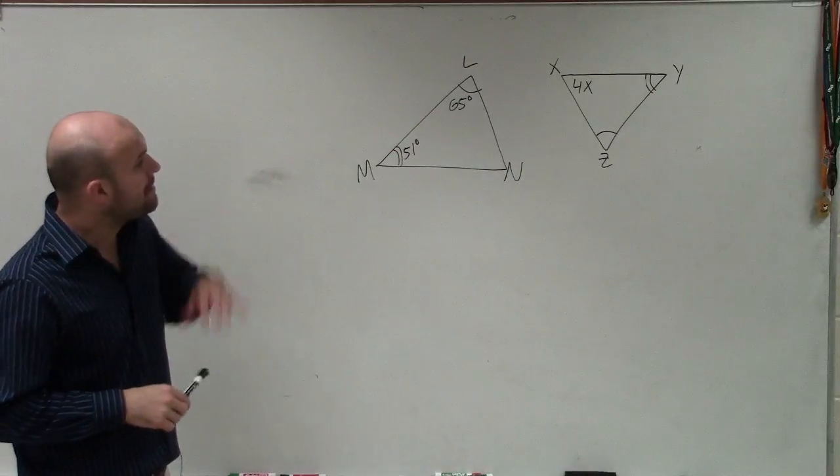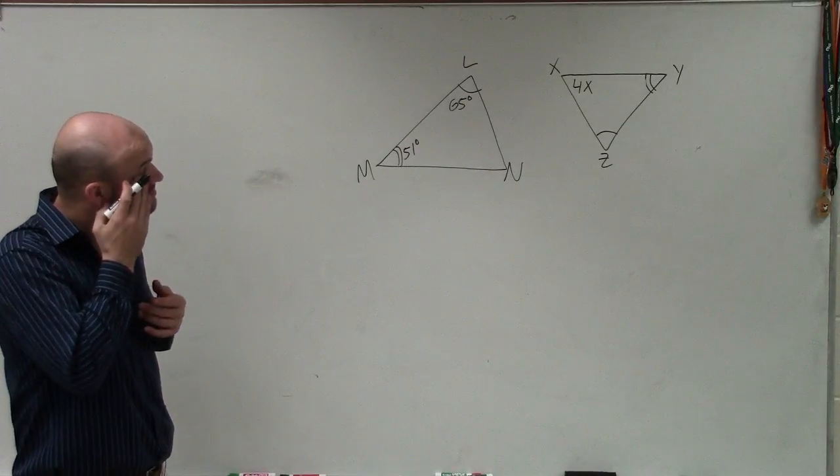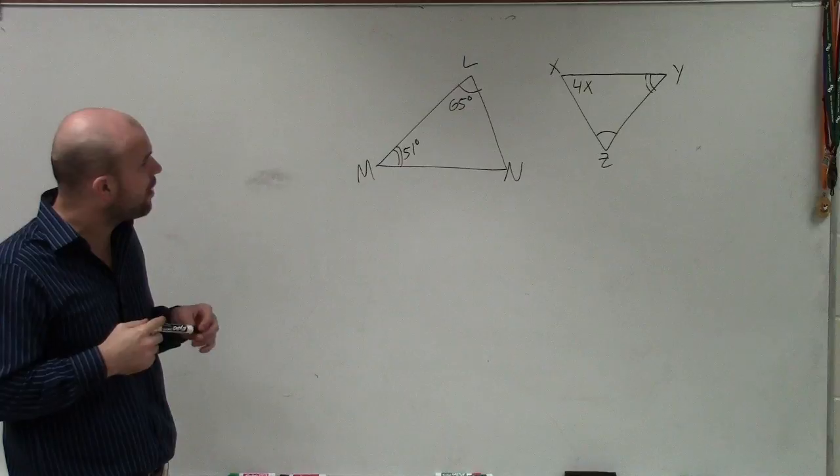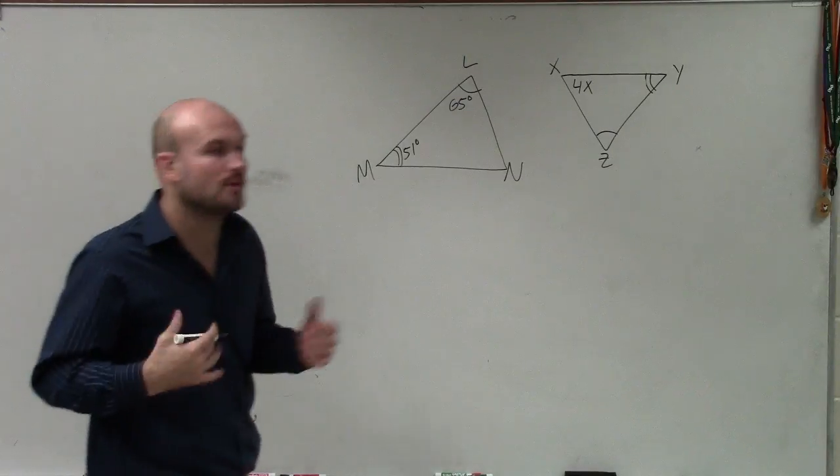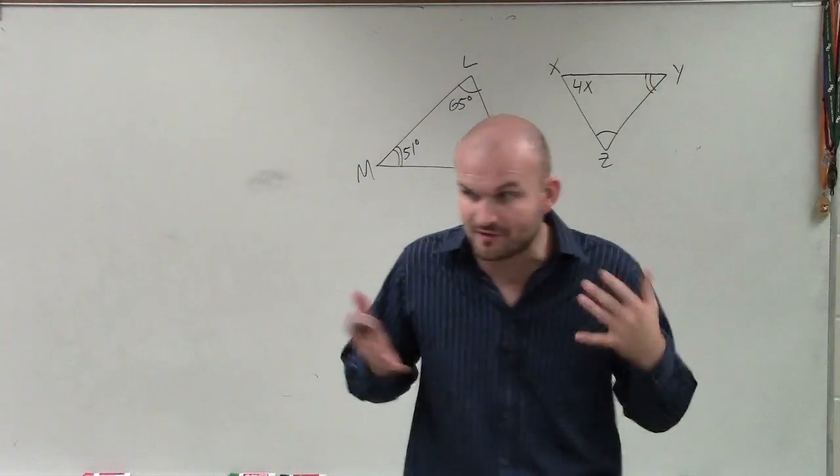So you have triangle MLN, and then you have another triangle with angles y, z, and x. What we want to do is determine the measure of x.